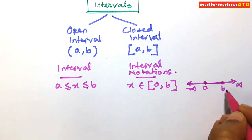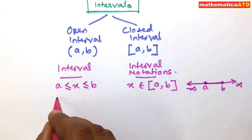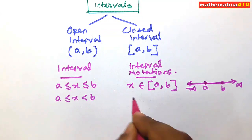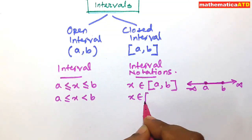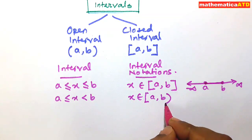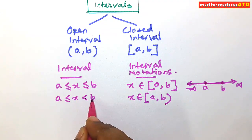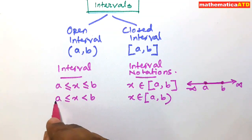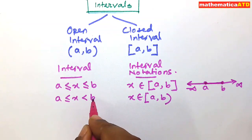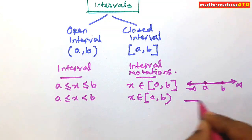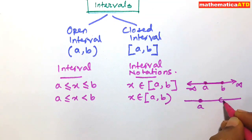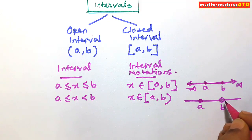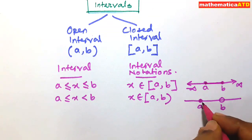If we write a ≤ x < b, then in interval notation we write x belongs to the semi-closed interval [a, b). Here x can take any value between a and b, including a because there is an equality sign x = a, but x is strictly less than b, so b is excluded. On the real line, a is represented by a dark ball (included) and b is represented by a white ball (excluded).